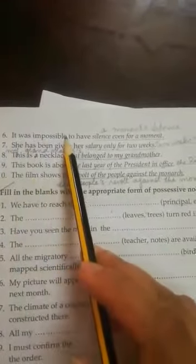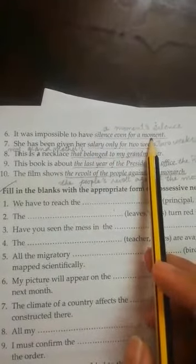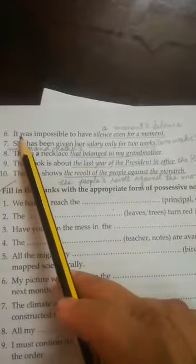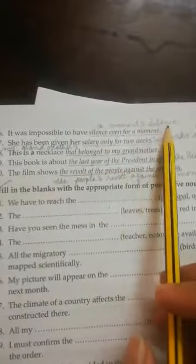It is impossible to have silence even a moment. When we change it to the possessive form, it becomes, it was impossible to have a moment's silence.